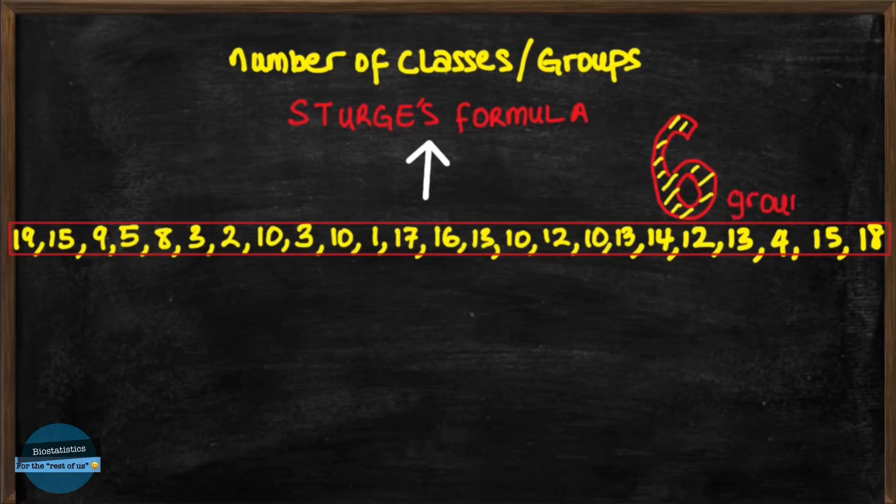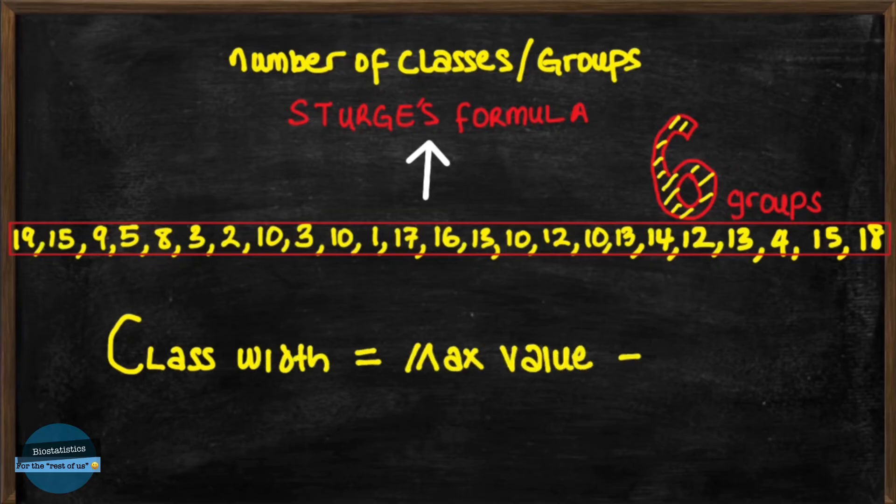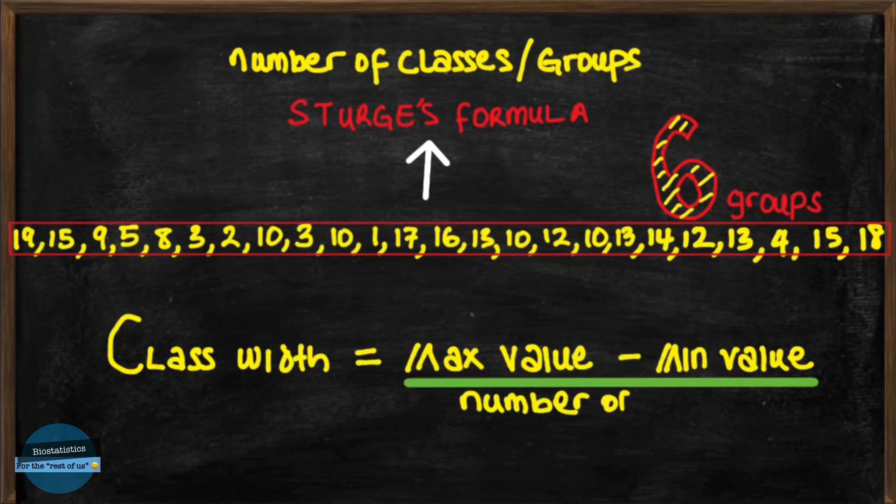To know the width of each class, we can apply the simple formula: class width is equal to the maximum value minus the minimum value all divided by the desired number of groups. To put this into statistical terminology,